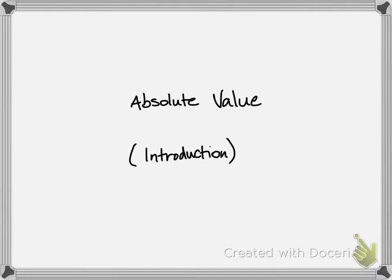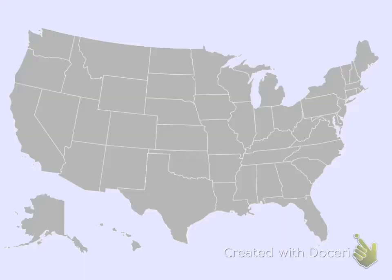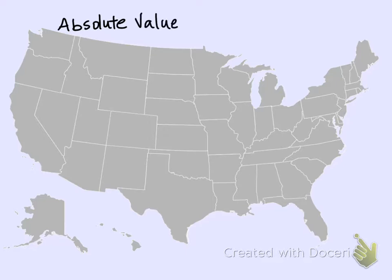Absolute value is basically when we care about the number but not its direction. We want the value, but we don't care about its direction. We want the value only.